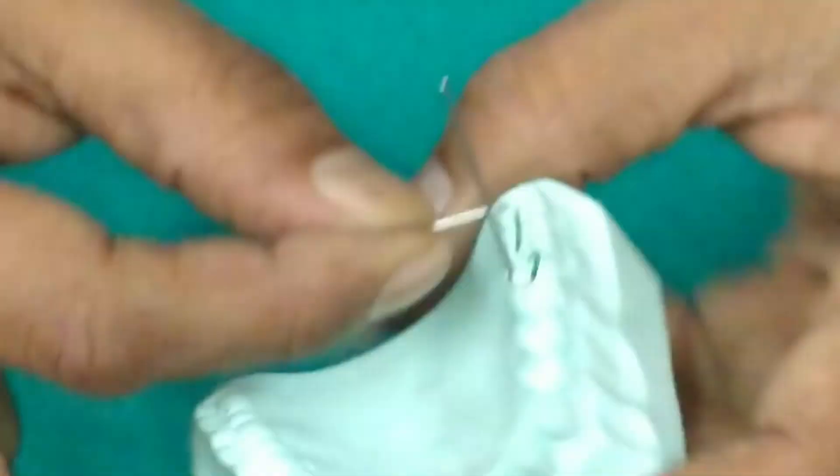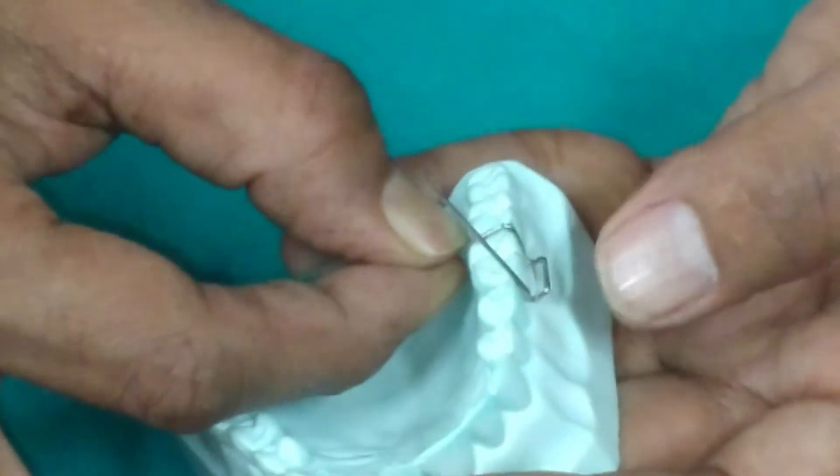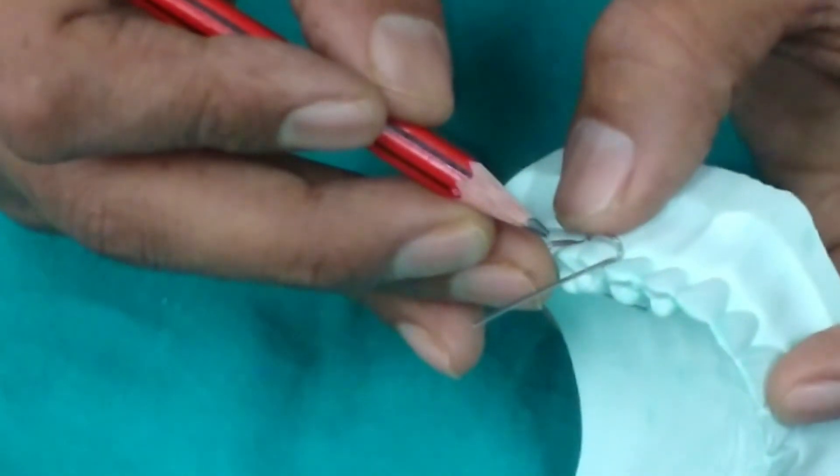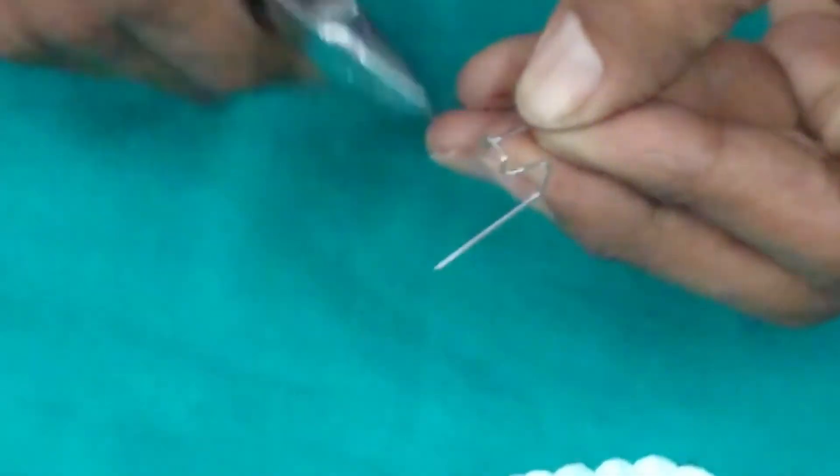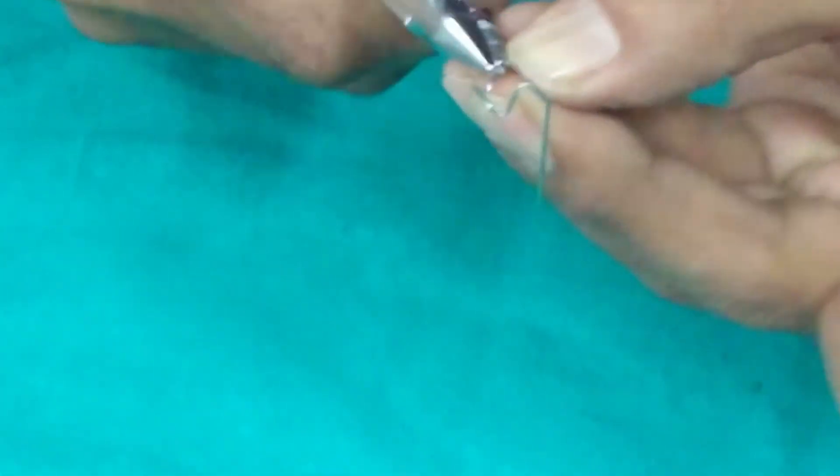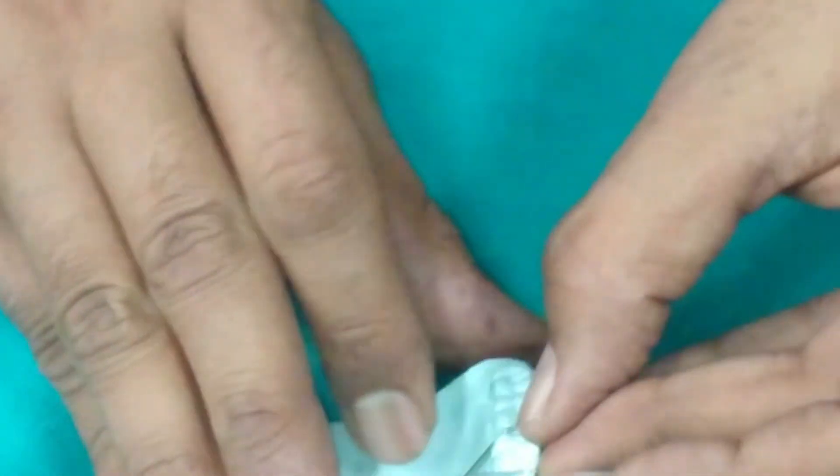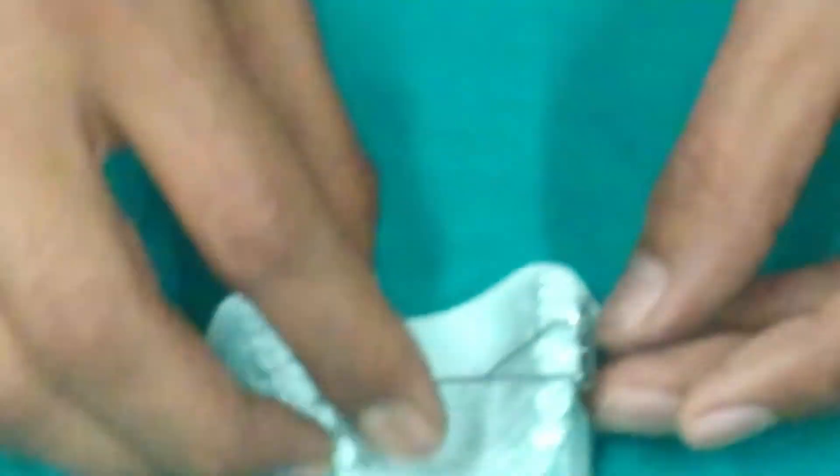Now we are adapting the palatal arms through the occlusal embrasure. We are adapting now the mesial arm. We are marking the point from where we are going to bend across the occlusal embrasure. We have to gradually adapt the retentive arm according to the morphology of the occlusal and the palatal surface, adapting the palatal retentive arm step by step.